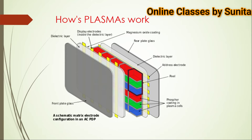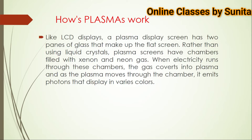Like LCD displays, a plasma display screen has two bands of glass that make up the flat screen. Rather than using a liquid crystal, plasma screens have a chamber filled with xenon and neon gas. When electricity runs through these chambers, the gas converts into plasma. As the plasma moves through the chambers, it emits photons that display in various colors.